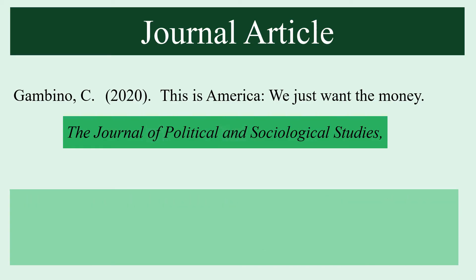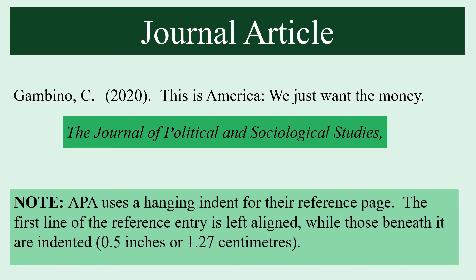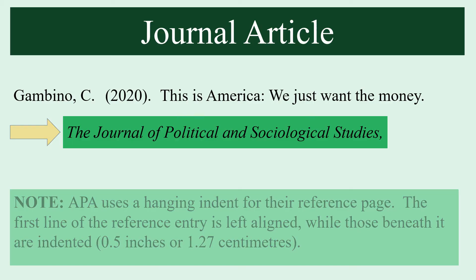You may have noticed that the journal's name is on the second line of the reference. APA uses a hanging indent for the reference page. This means the first line will be left-aligned, but those underneath will be indented 0.5 inches or 1.27 centimeters.